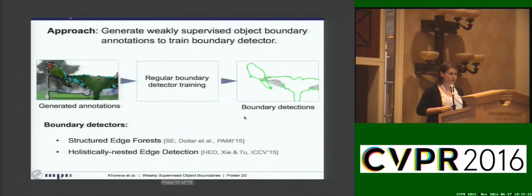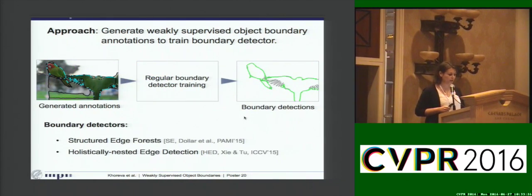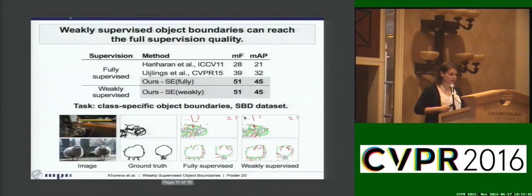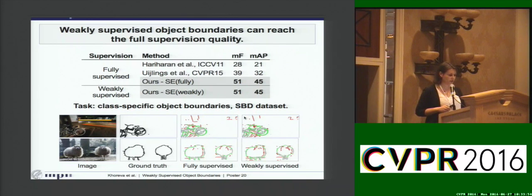After we generate our annotations, we train the detector in the regular fashion to produce the output. We consider two different types of boundary detector: the first is Structured Edge Forest, a classical local boundary estimator, and the second is Holistically-Nested Edge Detection, the state-of-the-art convolutional-based detector. The key result is that we are able to reach full supervision quality just via bounding boxes, outperforming the previous method and matching the quality of the boundary detector trained with full supervision.